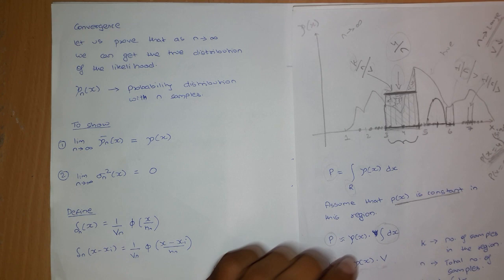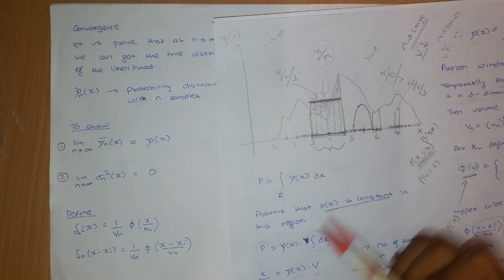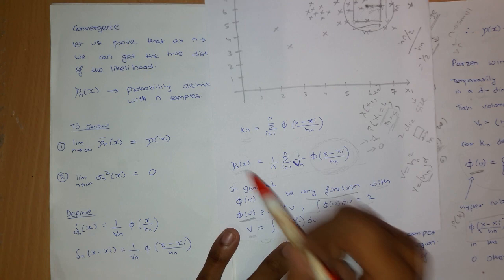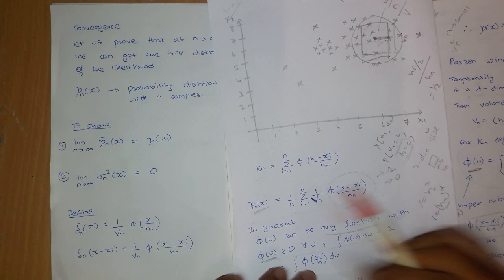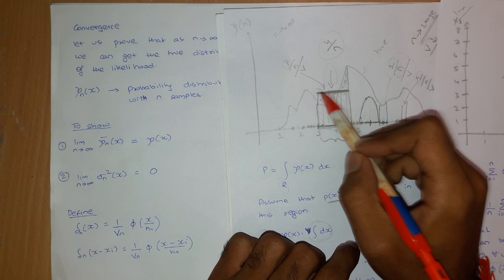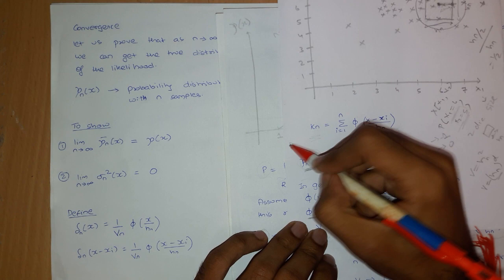What we are going to see is convergence — as we increase the number of n, we will have this. In my previous video, I had given the notation p_n of x. So p_n of x basically tells you the probability of x with respect to n samples. This is the density that we are approximating — not the true density. That is what is denoted by p_n of x: the approximated density.